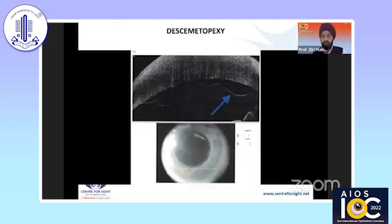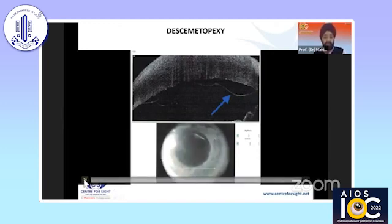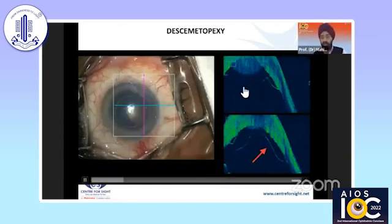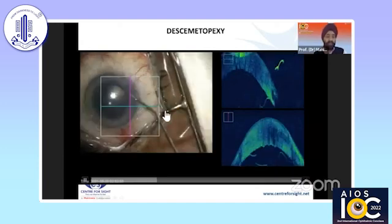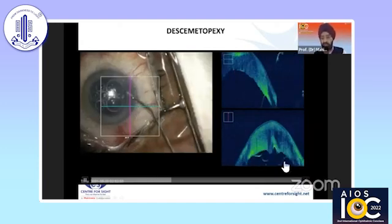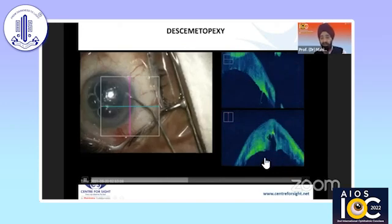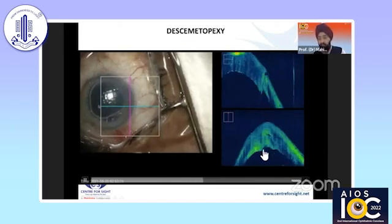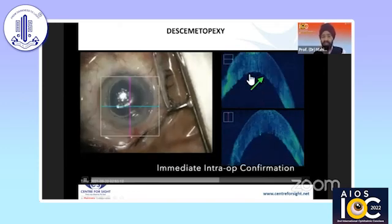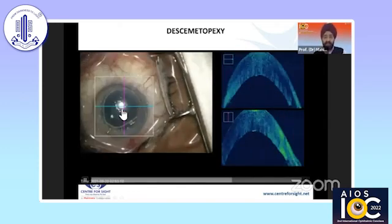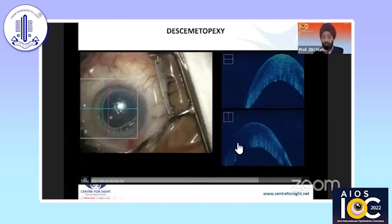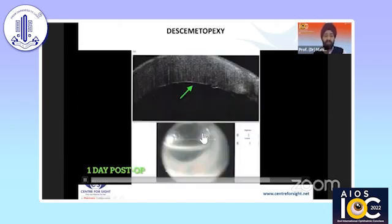This is the integrated intraoperative OCT — Tetyal and Namrata have done a lot of work in their group. You can see the same patient with Descemet's detachment and how we can use intraop OCT to see in real time whether the Descemet's detachment is settling. There is a huge detachment, we are sitting temporally and going from the inferior part. As the air bubble comes in, you can see the Descemet's detachment getting attached intraoperatively — a fantastic visualization. One day post-op, the patient recovered good vision.